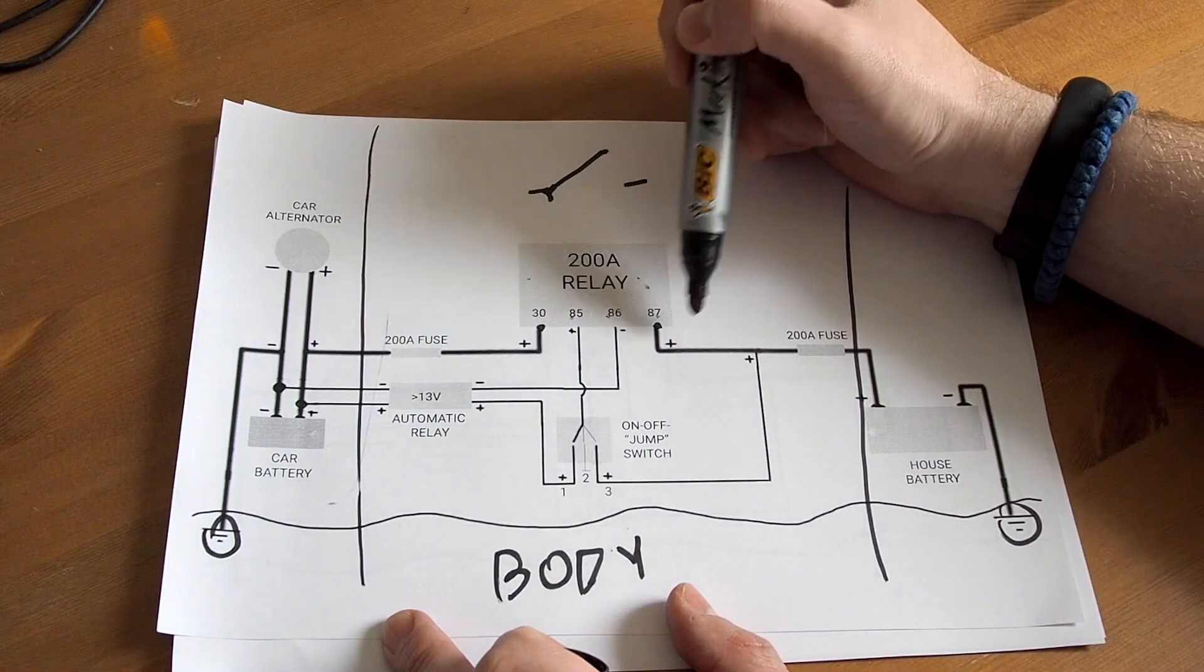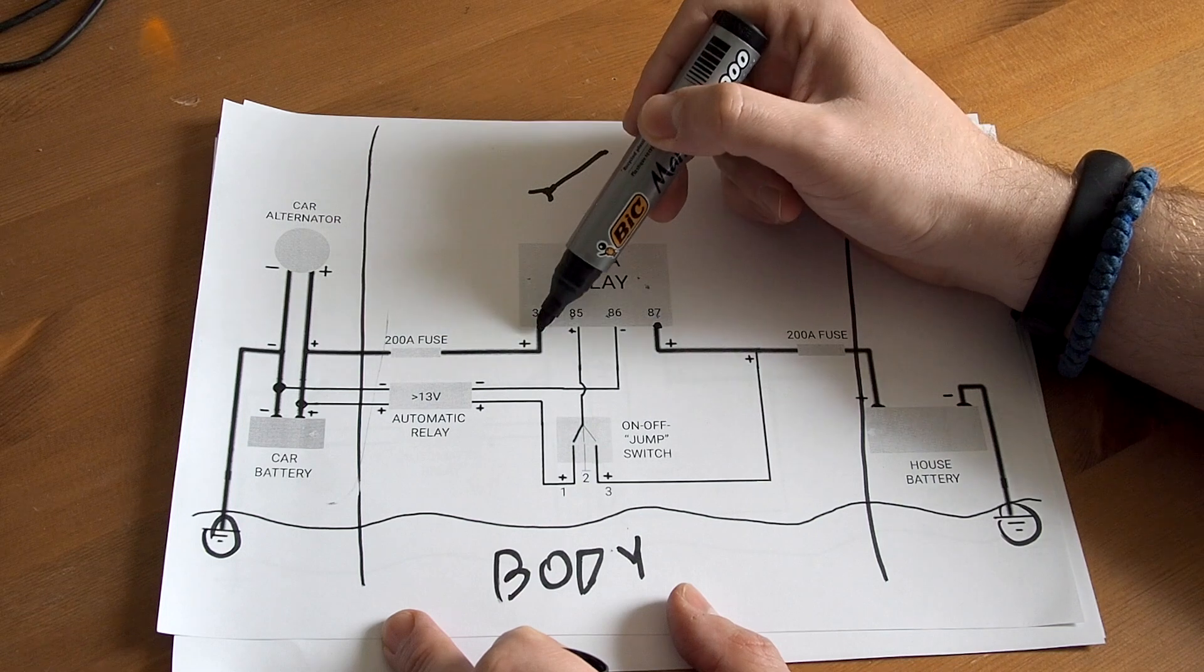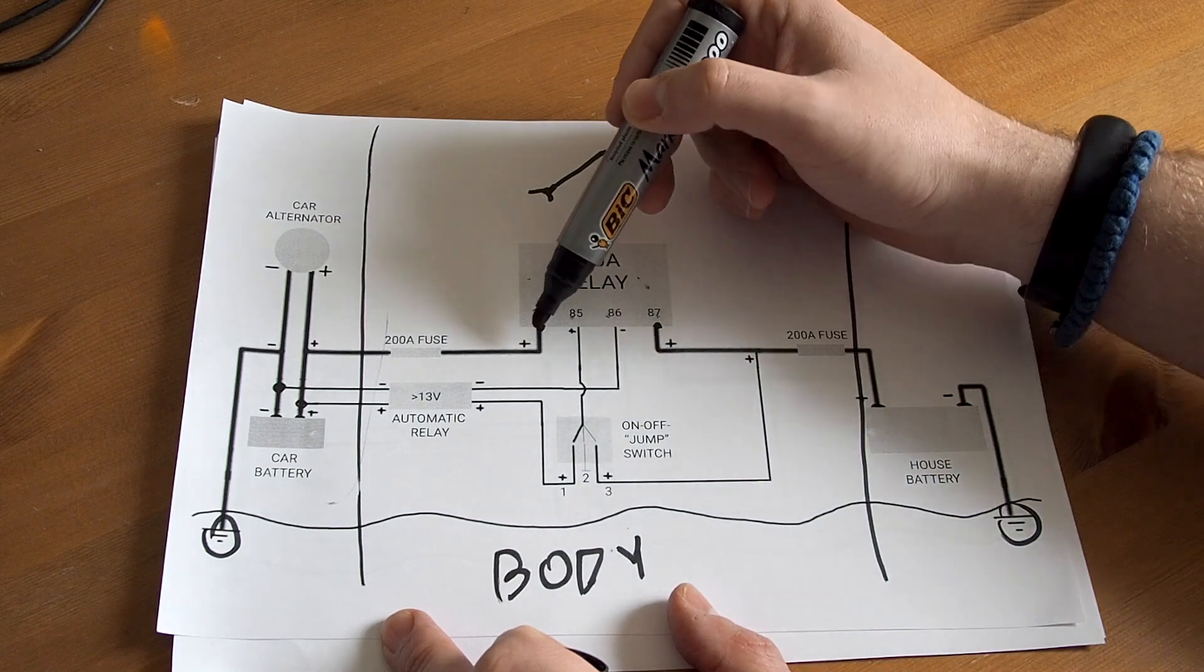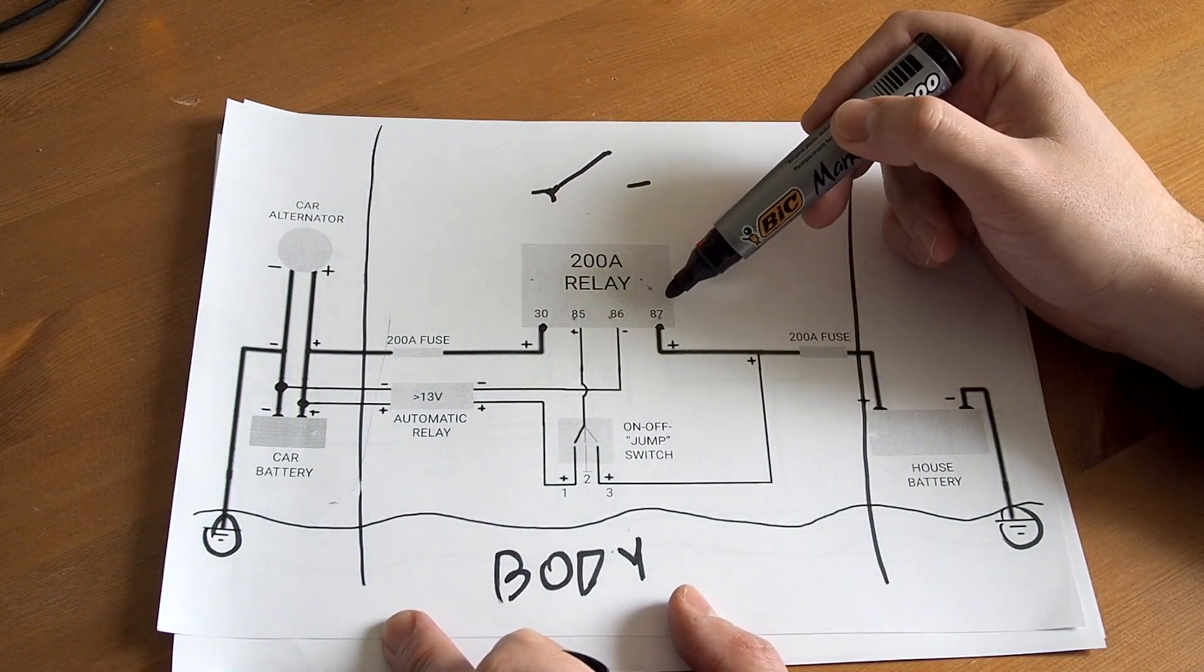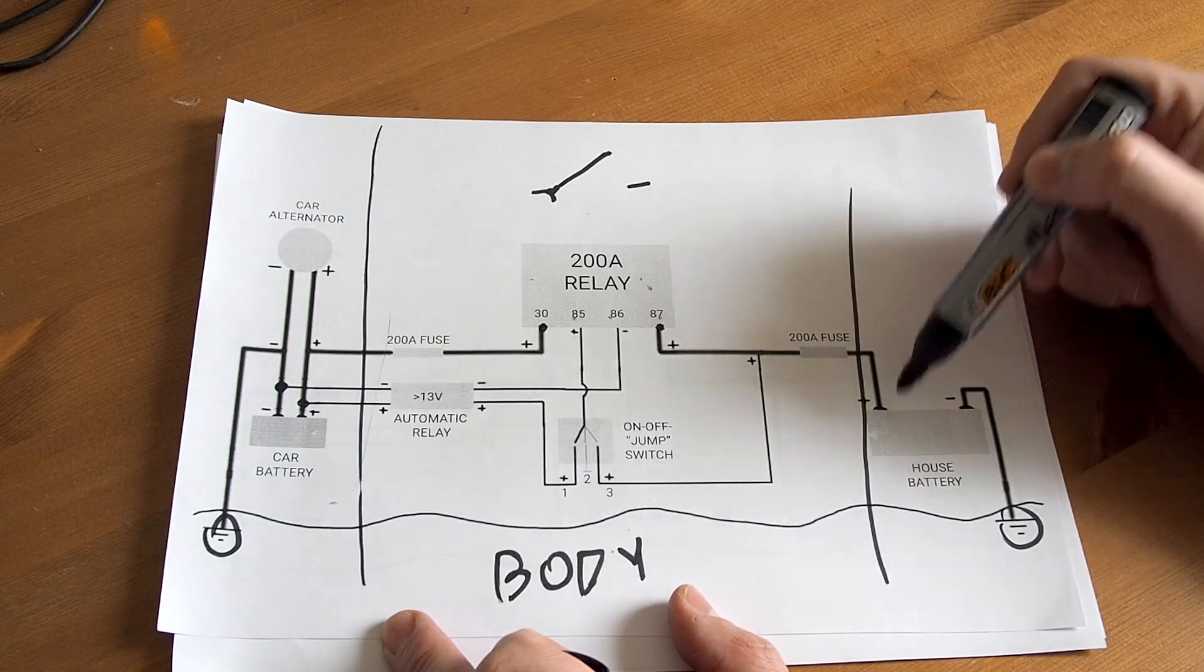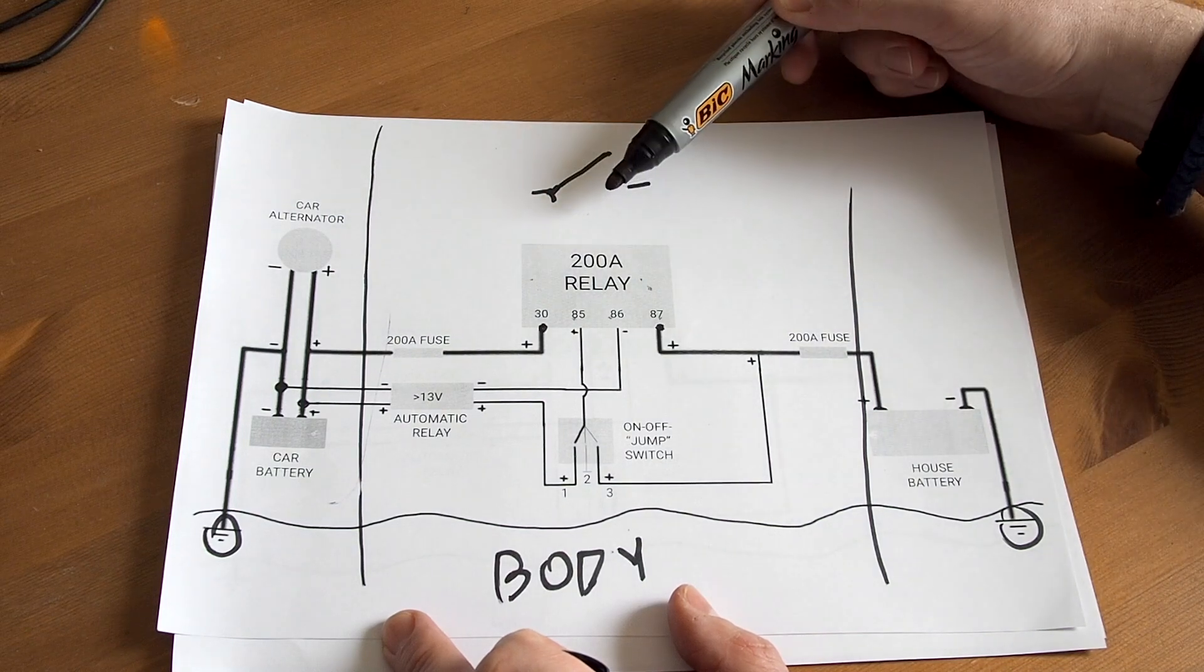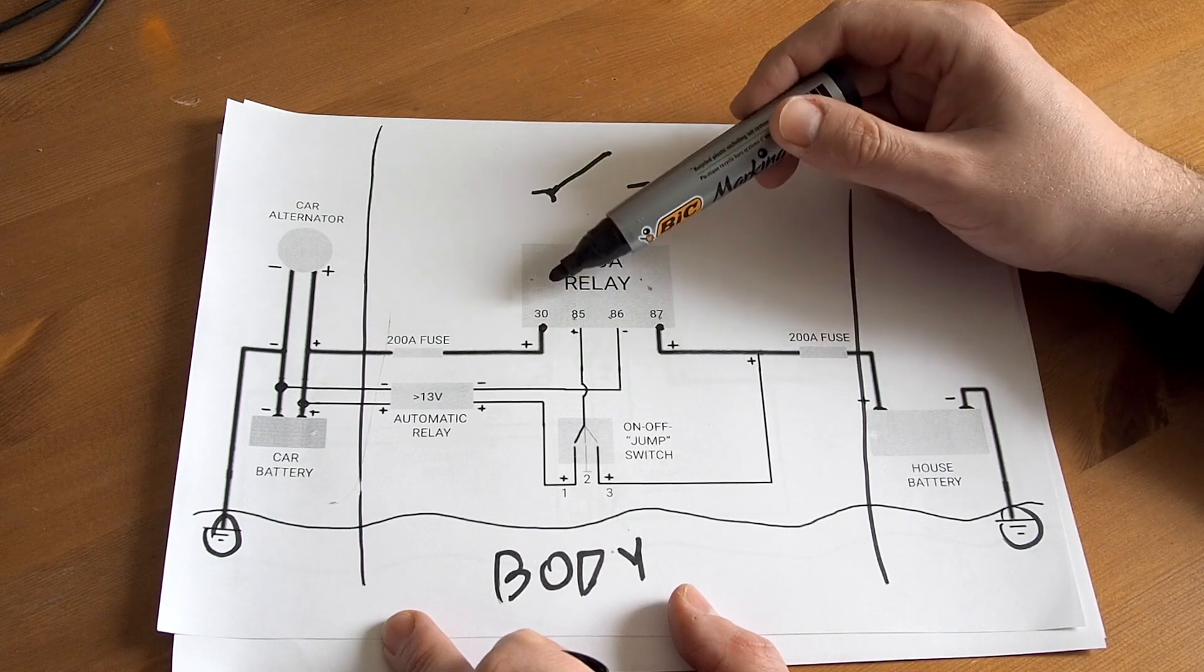Here is the main component, which is relay. It has four contacts and the 30 contact we must connect positive wire to your car battery. And to the 87 wire we connect positive wire to your house battery. But in normal state this relay stays open and doesn't pass the power through it between these connections.